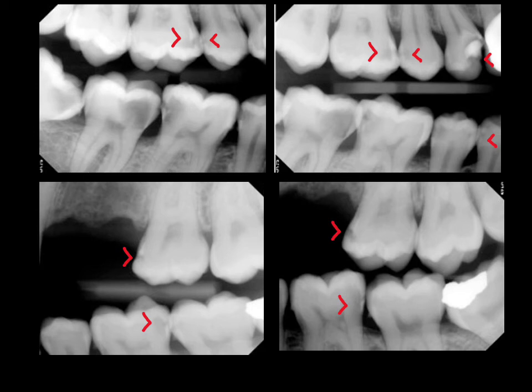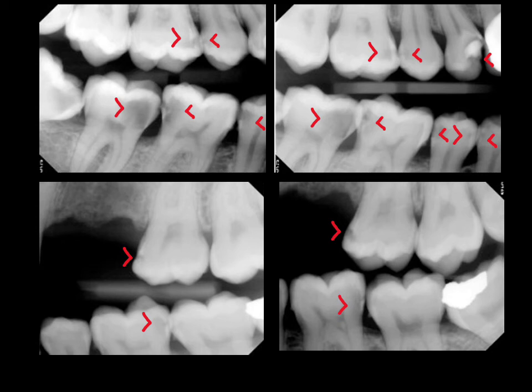Dropping down to the mandible, there's certainly significant decay on the distal of 19, which we can see on both radiographs. Continuing over to the right side of the mandible — distal of 28, mesial of 29, distal of 29, distal of 30, and then there's huge decay on the mesial of 31. On number 31 and number 32, I can't tell if there's a break in the interproximal area, so this could represent occlusal decay on the mesial aspect, which we would be able to confirm clinically.